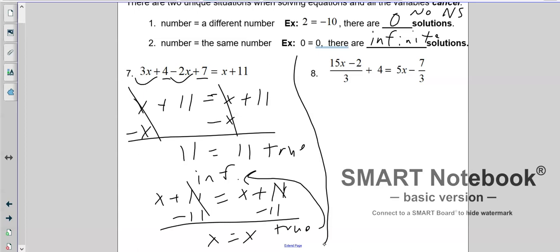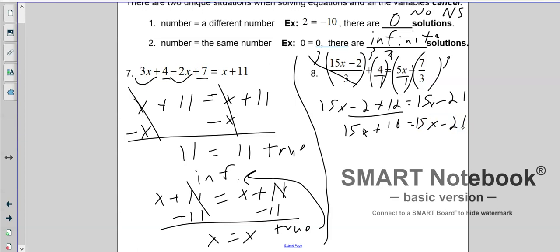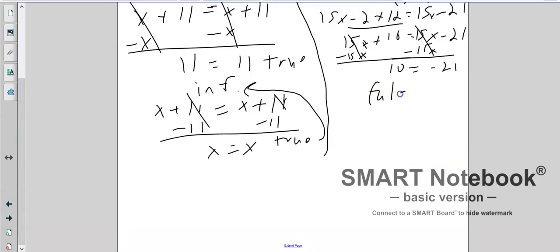You can kind of guess where this next one's going to go. But let's do it anyway. Now notice I have a 3 on the bottom. This is a 1 on the bottom and a 1 on the bottom here. I'm going to multiply everything by 3 because I want to get rid of my denominators. So that was cancelled, leaving me 15x minus 2. Remember, I don't distribute anything. Plus 4 times 3 is 12. Equals 3 times 5 is 15x minus 21. Here I have 15x plus 10 equals 15x minus 21. You can kind of see where this is going. If I subtract 15x from both sides, I end up with a false statement. 10 equals negative 21. That is a false statement. So there are no solutions.